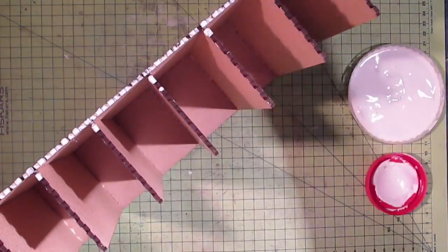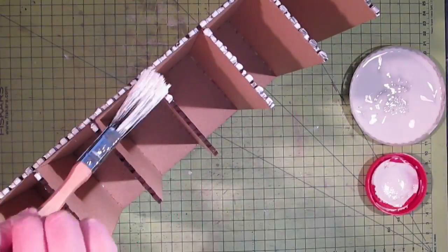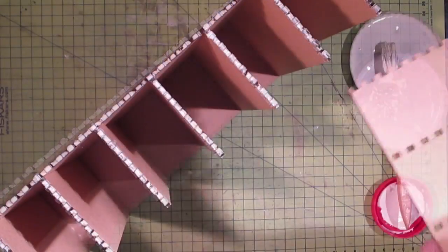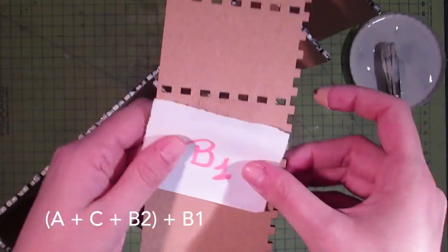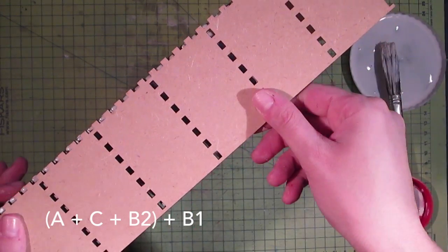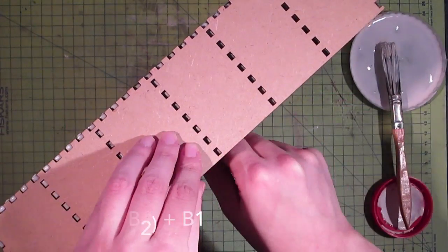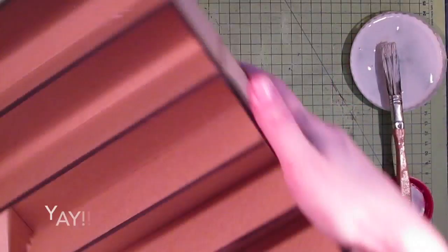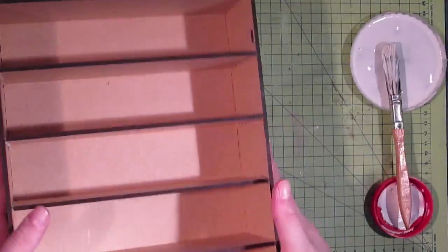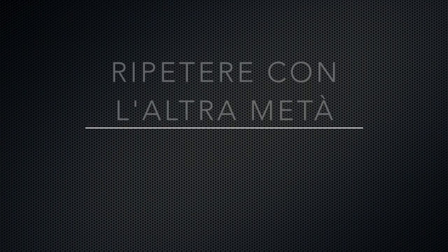And we will do the same for panel B1. And the first half of the chest of drawers is done. All you have to do now is to do the same for the other half.